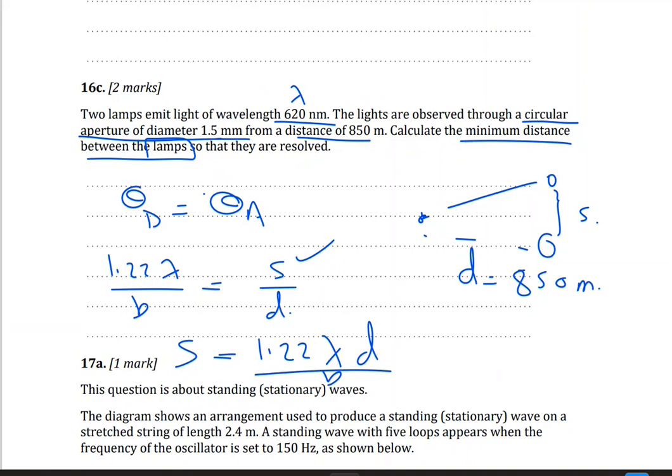Now what is B? B is the diameter of the aperture which is 1.5 millimeter. So 1.22 times, so here is 620 nanometer, 10 to the power negative 9, divided by 850, divided by 1.5 times 10 to the power negative 3, and this will give us 0.43 meter.